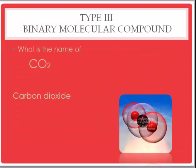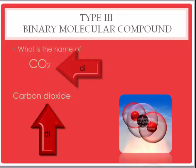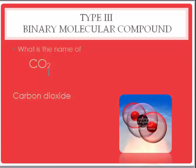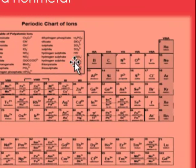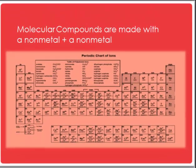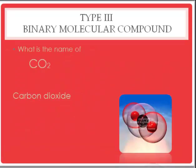Our first example is one you've all heard of before: carbon dioxide. Learning from what we already know, it looks like they've used a prefix, 'di,' to say that there are two oxygens — carbon dioxide. Carbon and oxygen are both non-metals on the periodic table. So the system we're learning today — Type 3, molecular — is for two non-metals.